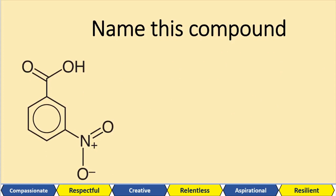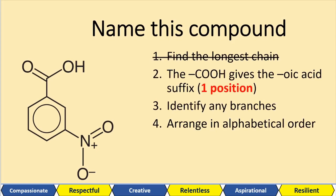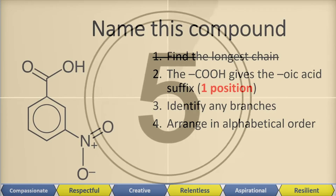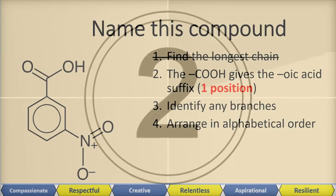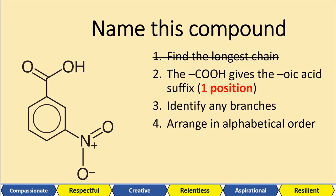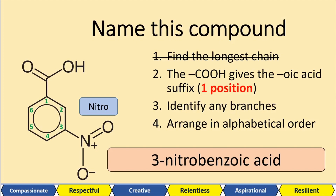How about this one? When you've got a benzene ring it's a little bit different, because now we're not counting from the carbonyl carbon — we're counting from the carbon attached to the carboxylic group, which is position one. To get the smallest value numbers, we go clockwise so that the nitrile group, which is our branch, will be on carbon three. So this is 3-nitrile benzoic acid.